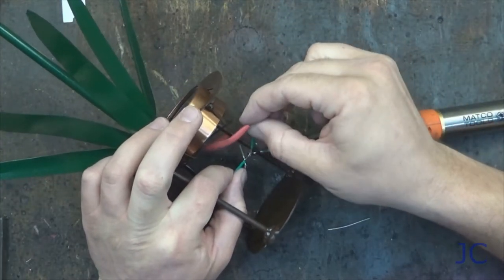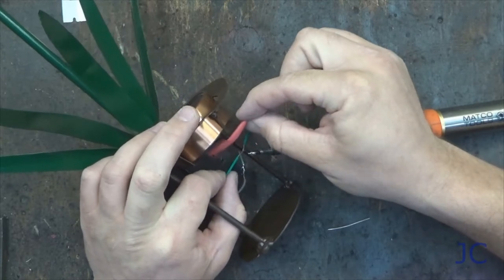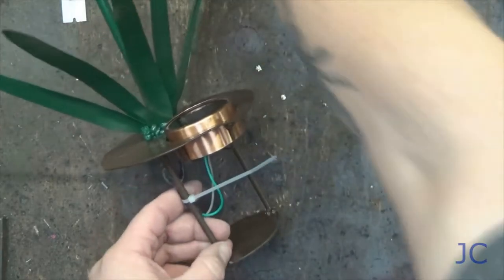Now we're going to solder the wires together in the base of the flower and put a little heat shrink on them. I like to tie everything off with a zip tie just to make sure it looks nice and clean.